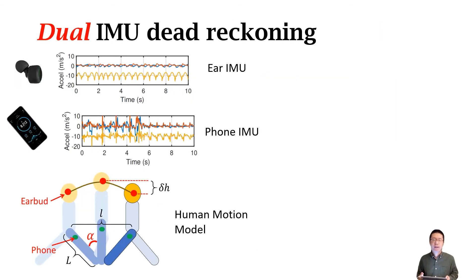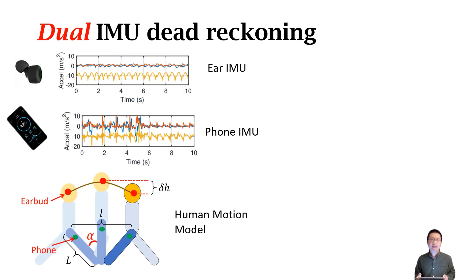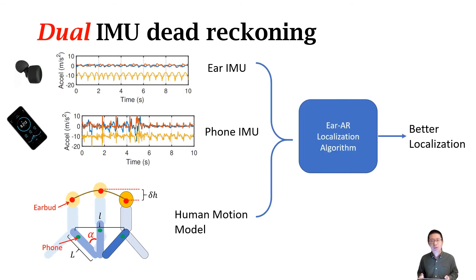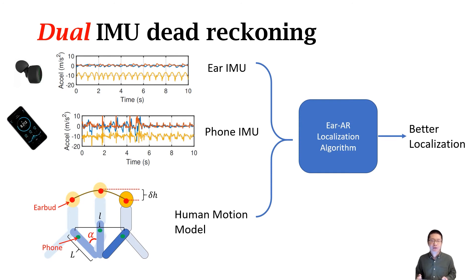We developed the LAR dual IMU localization algorithm that takes advantage of the clean IMU signal on the earphone. We jointly use the earphone IMU, the phone IMU, and a human motion model as inputs to our algorithm, and the output is a better localization result. We proved that the fusion of dual IMU is effective in minimizing the localization error.